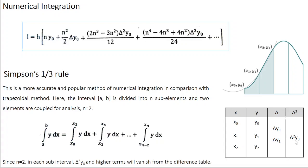Since you have terms only up to delta squared y naught, all the terms starting from delta cubed y naught onwards and all higher order difference terms vanish. So basically, you need to consider only the first three terms in this integral equation. The equation gets simplified: with n equal to 2, the first term is 2y naught, then 2 delta y naught, and the coefficient for delta squared y naught works out to — 2 cubed is 8, so 16 minus 3 times 4 is 12, giving 4 by 12 which is 1 by 3. So the coefficient is 1 by 3 delta squared y naught.